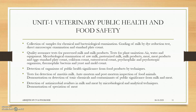In practicals, four units are present. Practical Unit 1 is Veterinary Public Health and Food Safety, covering antimicrobial residues in meat, ante-mortem and post-mortem inspection, detection of organisms, microbiological examination of raw milk and pasteurized milk and milk products, grading of milk by dye reduction test, direct microscopy test, somatic cell count testing, and appreciation of meat testing.